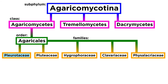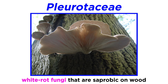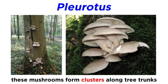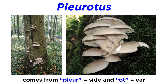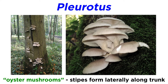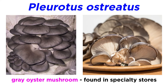Our next family, the Pleurotaceae, comprises mushrooms that are white-rot fungi, saprobic on wood, and have white spore prints. Within this family, the genus Pleurotus consists of mushrooms that generally form clusters along the trunk of a tree. The Greek origin of Pleurotus stems from pleur, meaning side, and oat, meaning ear. Pleurotus mushrooms have stipes that form laterally along the trunk and are commonly called oyster mushrooms.